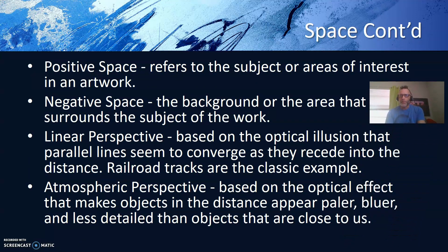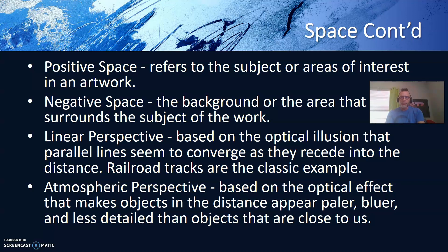Positive space refers to the subject or areas of interest in an artwork. Negative space refers to the background, or the area that surrounds the subject of the work. Linear perspective is based on the optical illusion that parallel lines seem to converge as they recede into the distance. Railroad tracks are often the classic example, as is looking down a long highway.